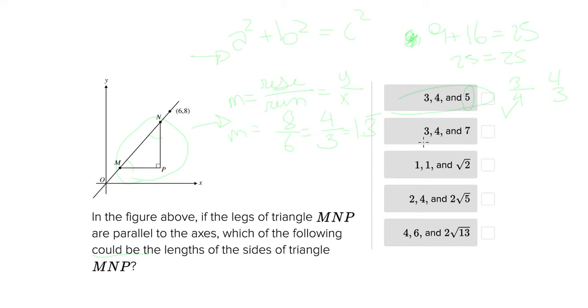For the Pythagorean theorem here, we just saw the Pythagorean theorem for 3, 4, and it should equal 25. And 7 squared is not 25, it's 49, so that can't be an option.